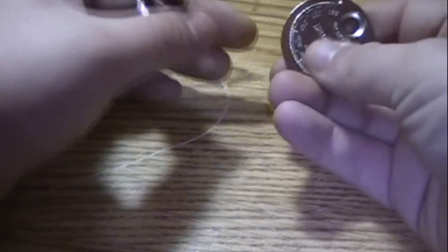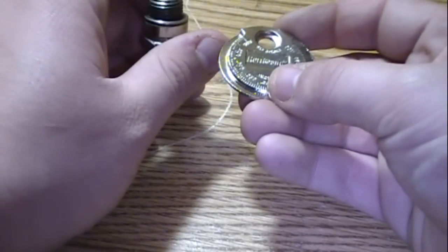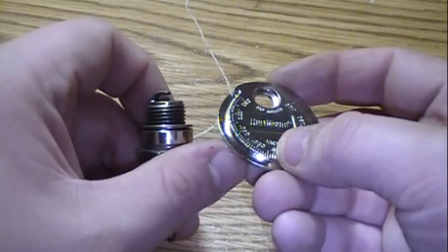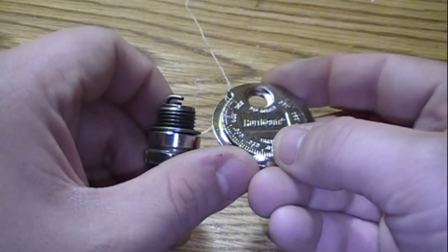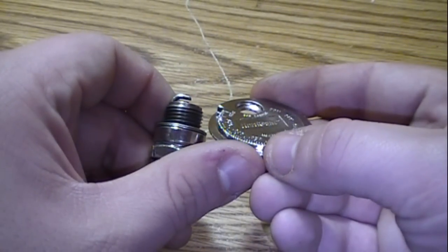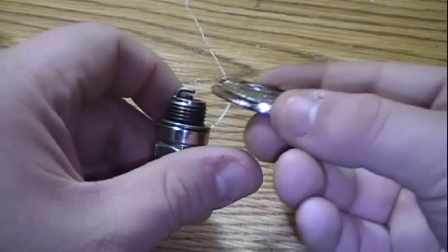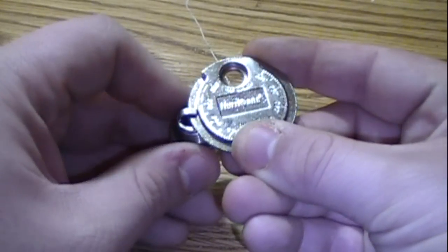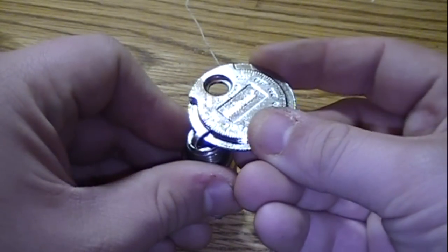Instead, what you would do is you would look up the manufacturer specifications, and let's say the specs for this engine are for a 40,000 gap. You check the gap and this is just below 35,000, so that wouldn't be any good.